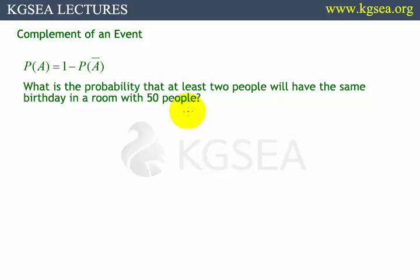How do we do this? This gets complicated. There could be 25 pairs that share the same birthday, two each. There could be three sharing birthdays, several clusters of them, or they could be all 50 sharing the same birthday. How can we account for all these possibilities? There are so many — five people sharing, then three here, and seven there — all these are just impossible to compute.